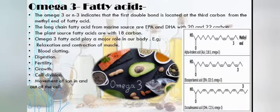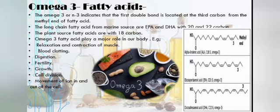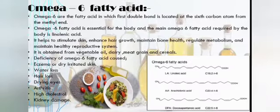What are omega-3 fatty acids? The number 3 indicates that the first double bond is located at the third carbon from the methyl end of the fatty acid. Omega-3 fatty acids obtained from marine sources are EPA and DHA, with 20 and 22 carbons respectively, while the plant-derived form is ALA with 18 carbons. Omega-3 fatty acids play a major role in the body, involving relaxation and contraction of muscles, blood clotting, digestion, fertility, growth, cell division, and movement of ions in and out of the cell.